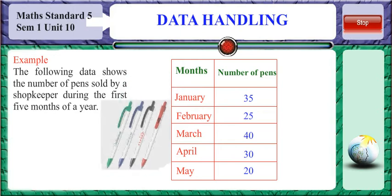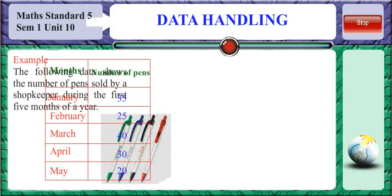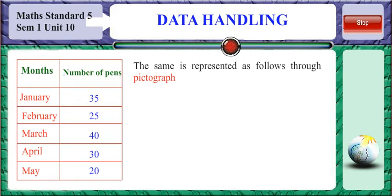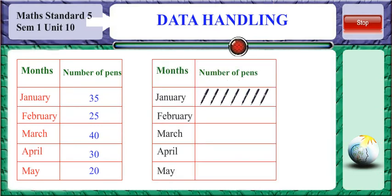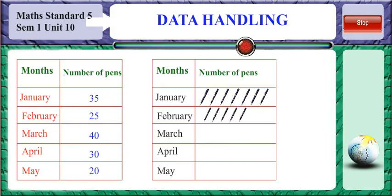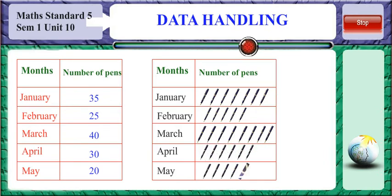So when the number to be represented is large, we choose a symbol to represent a certain number of objects. The following data shows the number of pens sold by a shopkeeper during the first 5 months of a year, represented through a pictograph. The number of pens are all multiples of 5, so each pen symbol represents a count of 5 pens. For January, we draw 7 pens: 7 into 5 gives 35 pens, the actual number sold. For February, we draw 5 pens since 5 into 5 is 25 pens. And so on for March, April and May.